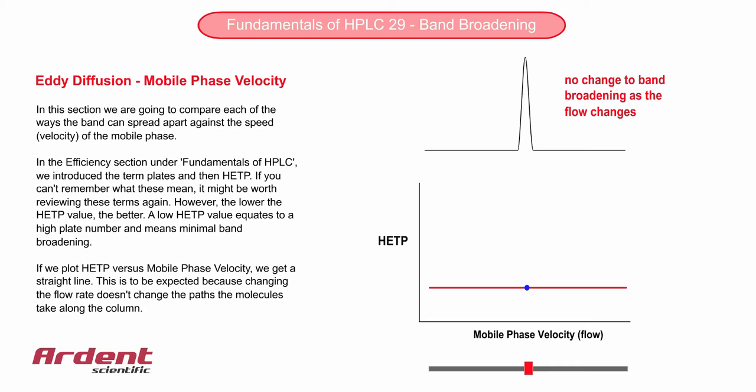However, the lower the HETP value, the better. A low HETP value equates to a high plate number, and means minimal band broadening.